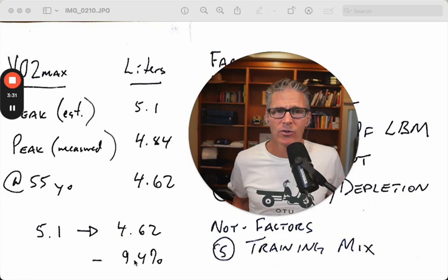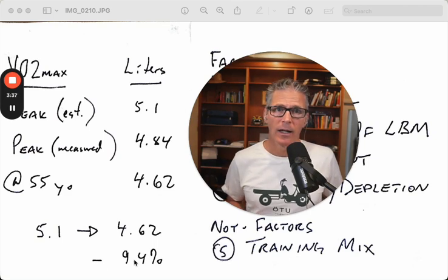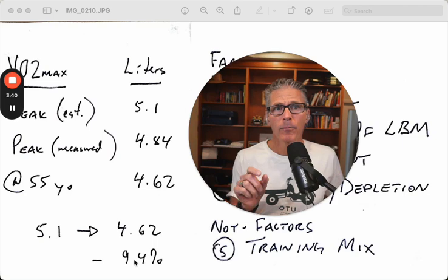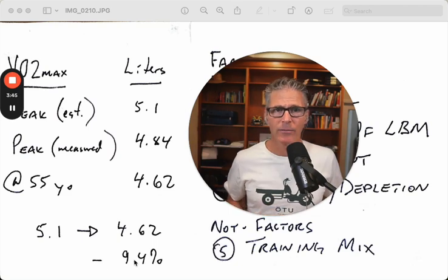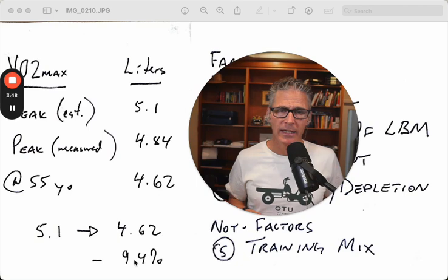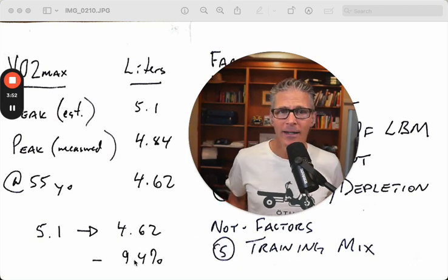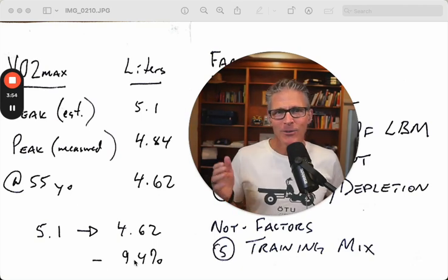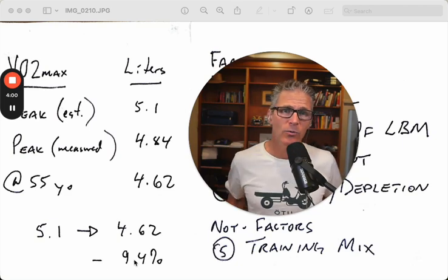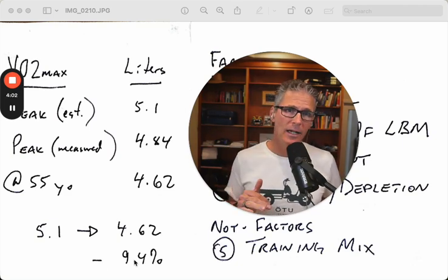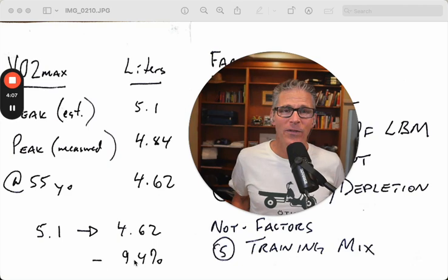When you hear VO2 max numbers, they're normally expressed in relative measures. In other words, it's a number per kilo. You take those liters, divide them by your total kilograms, and you get milliliters per kilo. One of the factors of many people declining is you're getting a double whammy. Your lean body mass is declining with age, but your total mass is going up. So your relative score is declining both from the engine shrinking but also from carrying around a bit more fat as well.